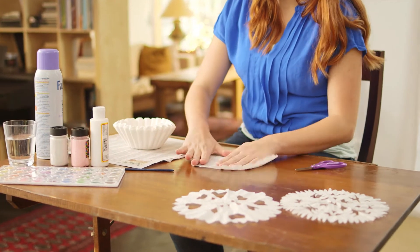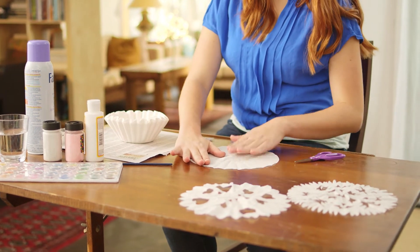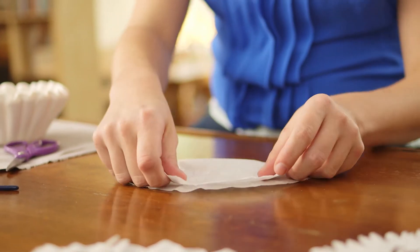To make basic snowflakes, open a round coffee filter and lay it flat. Fold the filter in half and then fold it in half again.